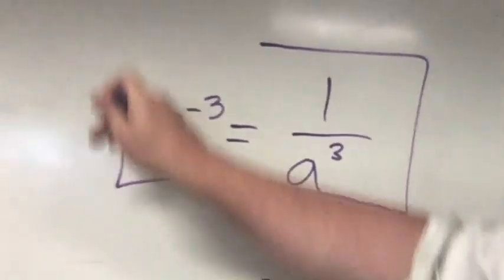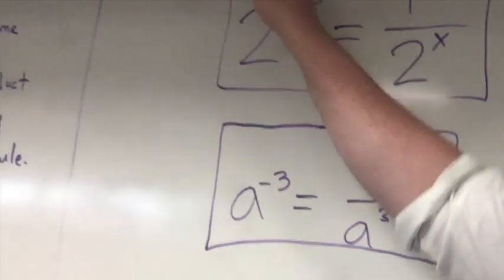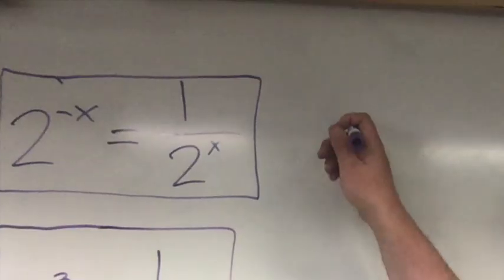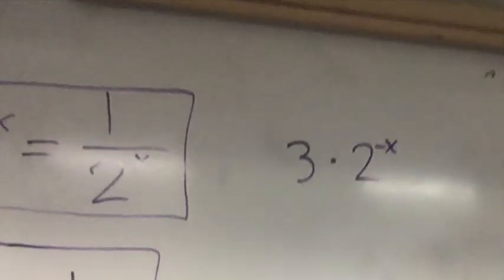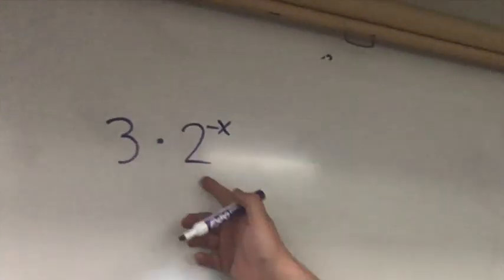Here are two examples of what you could do if you saw these expressions. These are equivalent ways of rewriting the same expressions. Now you have to be careful because if you're multiplying by something, only the thing that has the negative exponent is affected.